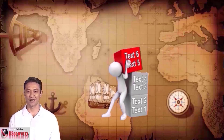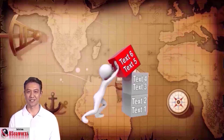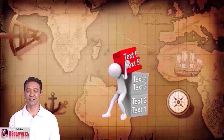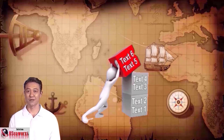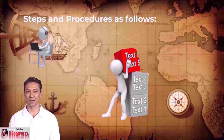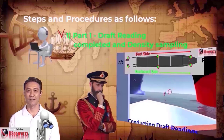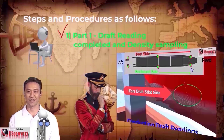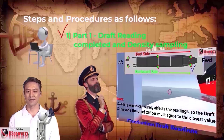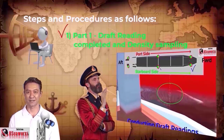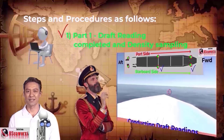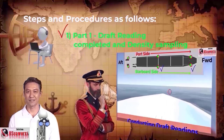The abbreviations may not be exactly written in other forms and procedures. However, the method is basically standard and likewise used in any draft survey. To continue with steps and procedures: Part 1 — we had the draft reading completed, and of course we have to take the density sampling, which was shown in Part 1.